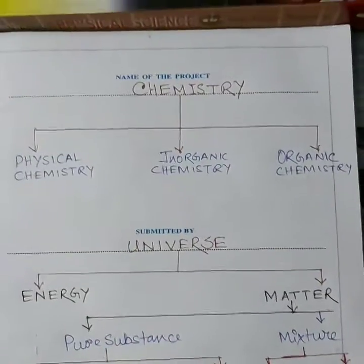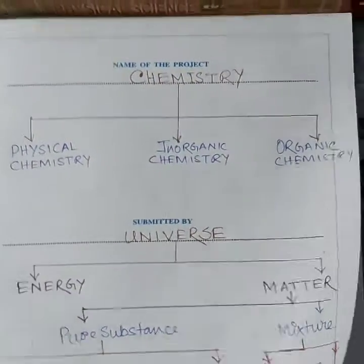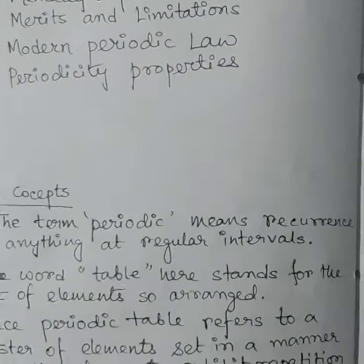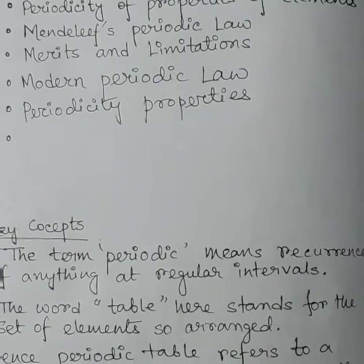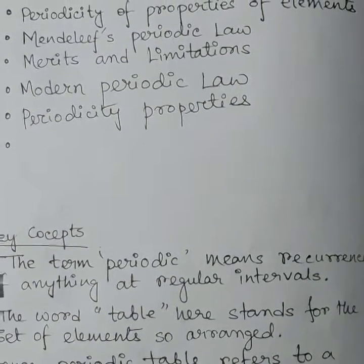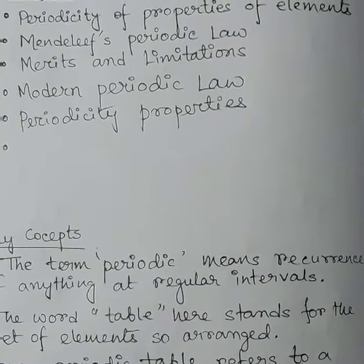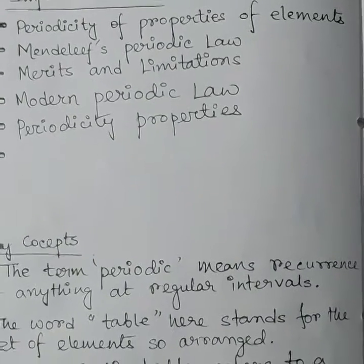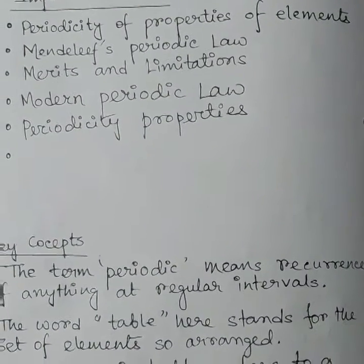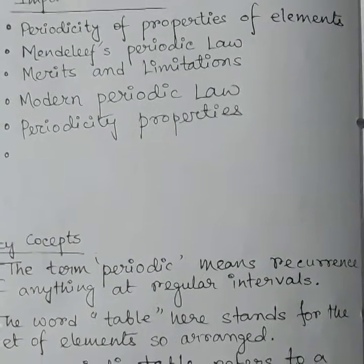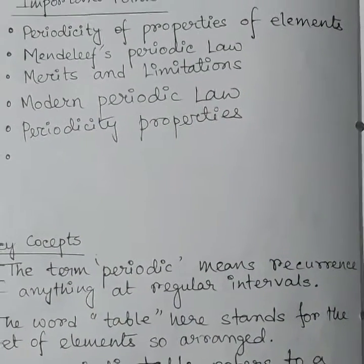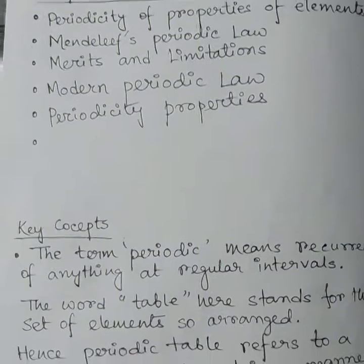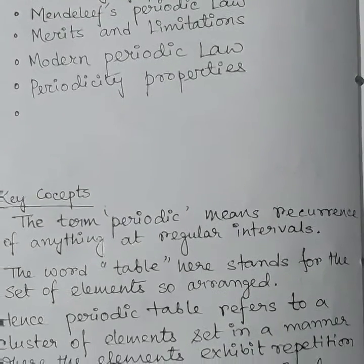The periodic table is the most important chapter in inorganic chemistry. The main important features we will cover include: periodicity of properties of elements, Mendeleev's periodic law, merits and limitations of Mendeleev's periodic table, modern periodic law, and periodicity properties in detail.